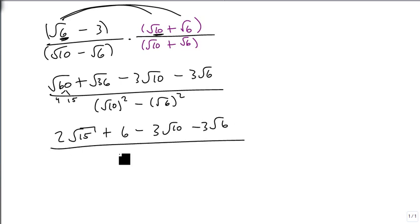Plus 6 - 3√10 - 3√6, all over - √10 squared is 10, √6 squared is 6. 10 - 6 is 4.